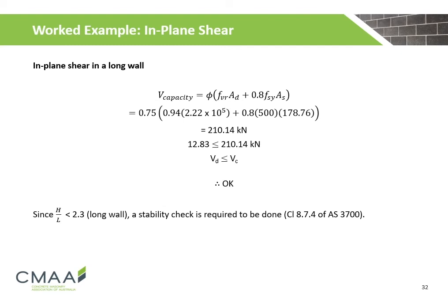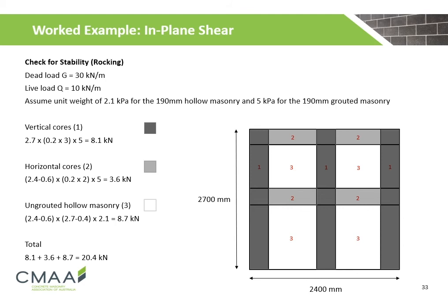However, since this is a long wall, a stability check for rocking is required. The self-weight contributes to the stability of the wall. Assuming a unit weight of 2.1 kPa for hollow masonry and 5 kPa for grouted masonry, the self-weight for the vertical cores, horizontal cores, and ungrouted hollow masonry is calculated. The total self-weight of the wall is calculated to be 20.4 kN.